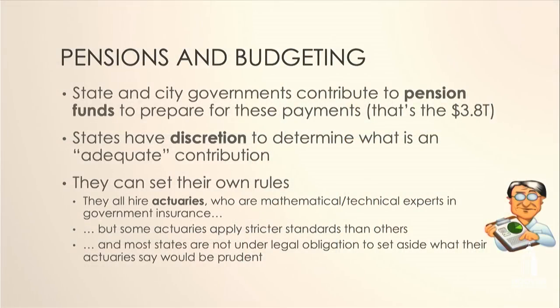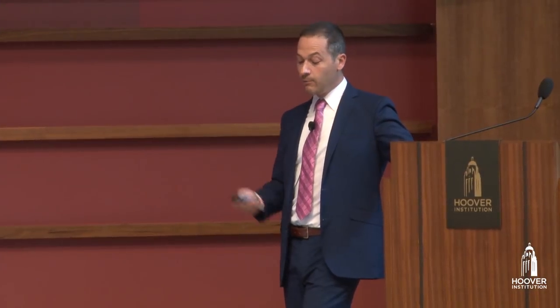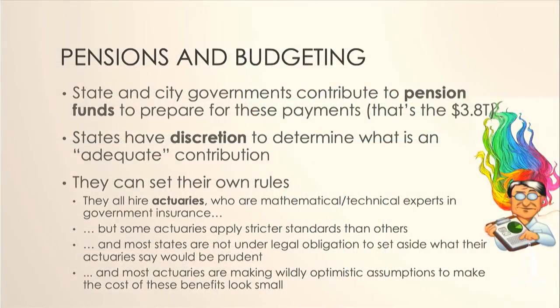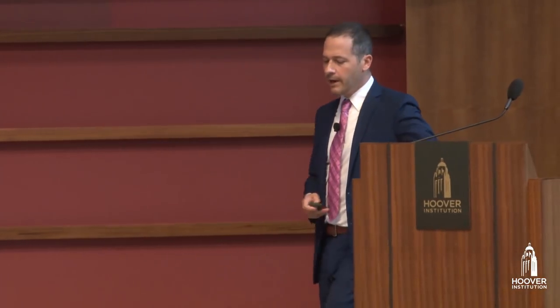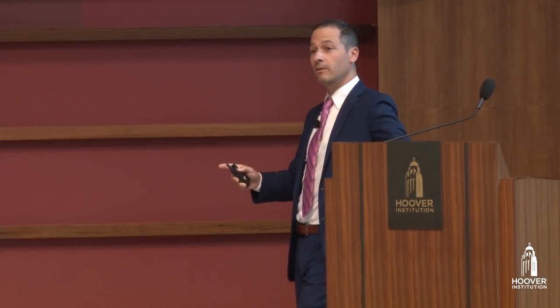Most states are not under any legal obligation to even set aside what their actuaries recommend. What I pointed out to him was that many other states just report what actuaries said they needed to set aside versus what they actually set aside — sometimes a billion required, a million contributed. Most actuaries end up making wildly optimistic assumptions, and the actuarial firms that have survived are the ones willing to make the most aggressive assumptions.